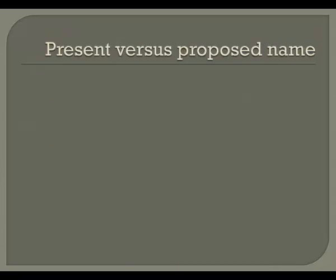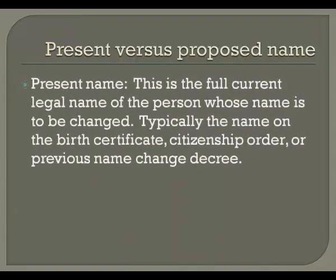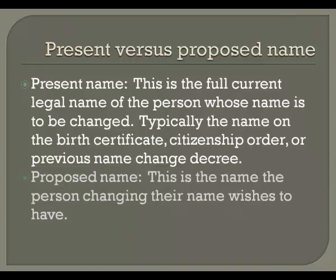Before we begin, I'd like to discuss two definitions. First, present name — this is the full, current, legal name of the person whose name is to be changed. Typically, this is the name on that person's birth certificate, citizenship order, or previous name change decree. The second is proposed name — this is the full name the person changing their name wishes to have at the completion of the name change procedure.